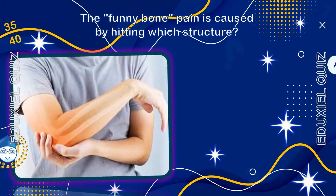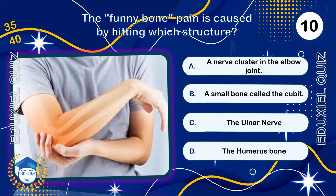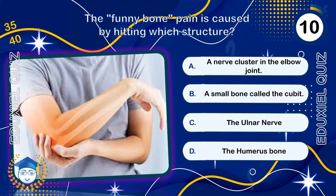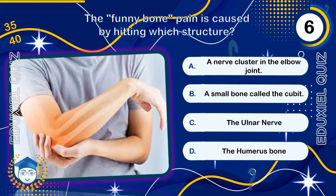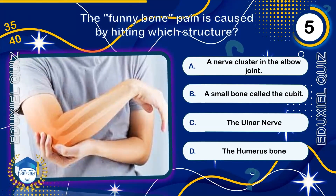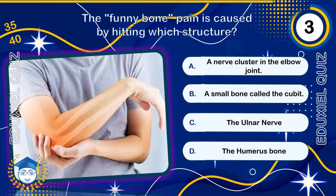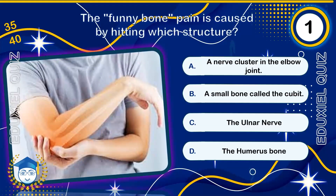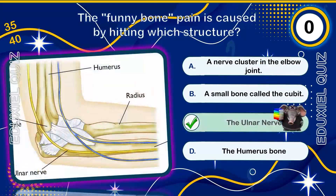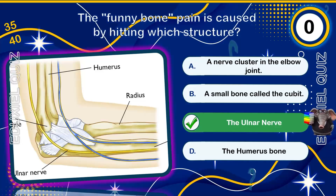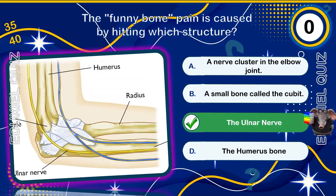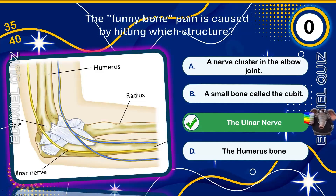The funny bone pain is caused by hitting which structure? The ulnar nerve. The ulnar nerve runs very close to the surface at the elbow, the medial epicondyle, and is unprotected by muscle or fat, causing the tingling electric shock feeling.